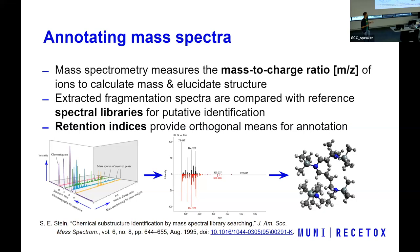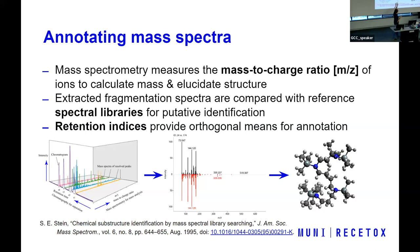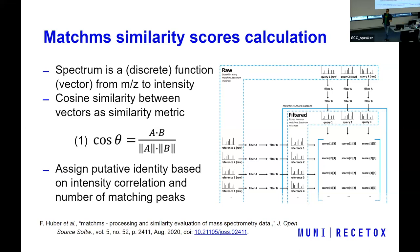From time, we can compute a retention index. In the end, we have basically two dimensions to identify our data: the mass to charge ratio with the peaks in the signal, and the time domain. We start with raw data, do some pre-processing and pull out spectra which we believe come from a single molecule. We compare them to our library and by comparing to something we already know, we find out the structure of this specific compound.